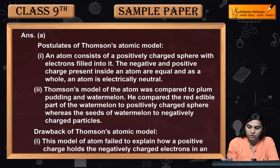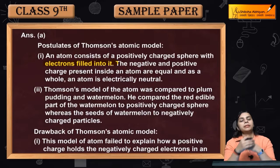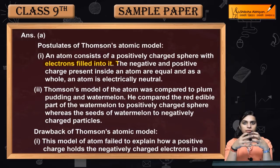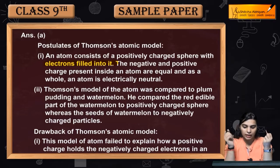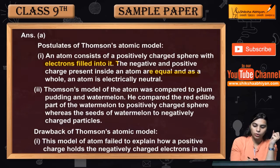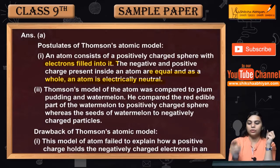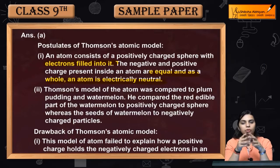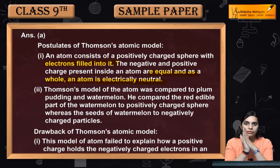An atom consists of a positively charged sphere with electrons embedded in it. Thomson told us that our atom is a positively charged sphere within which electrons are present. The positive and negative charges present inside an atom are equal, and as a whole, an atom is electrically neutral.